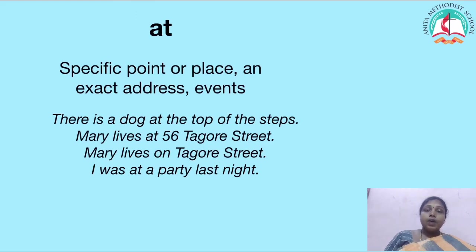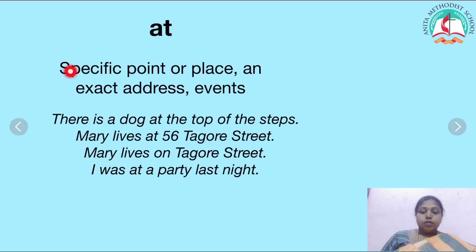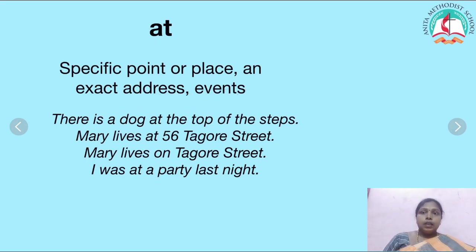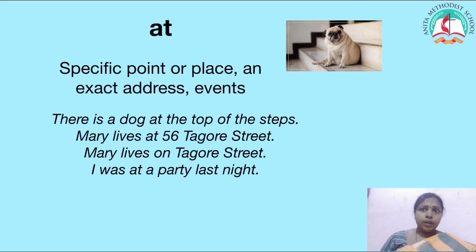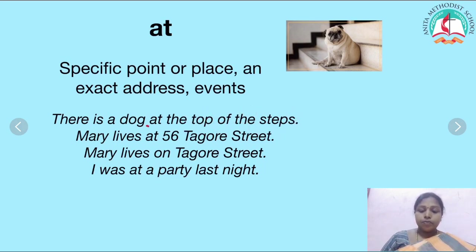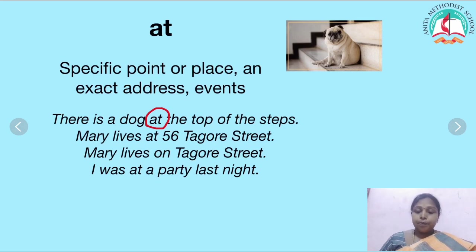Let's see where to use at, in, and on. At is used for a specific point or place, an exact address, and an event. For example: there is a dog at the top of the steps. Here I am just pointing the specific place — the specific point where the dog is. At is used for a specific point or place.